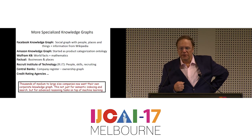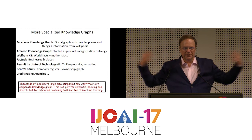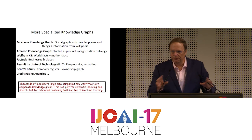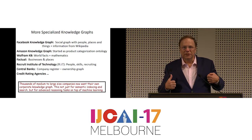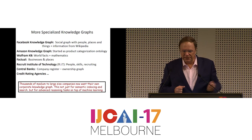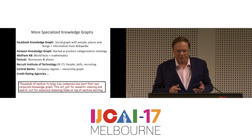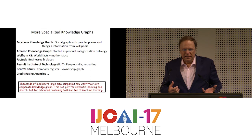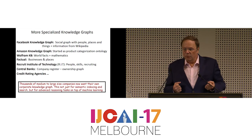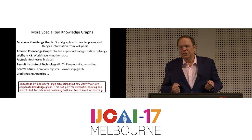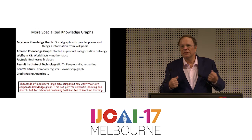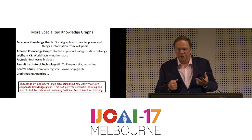Central banks of Europe maintain a knowledge graph that starts with a company register and adds knowledge about which company owns which part of which company. Credit rating agencies need knowledge from different sources — banks, land registers, et cetera — to determine whether a person is creditworthy. But there is a new phenomenon now: thousands of medium-sized and large companies want their own corporate or enterprise knowledge graph, which is much more specialized than the world knowledge graphs shown before. This is not just for semantic indexing and search, but for advanced reasoning tasks on top of machine learning. There is a clear need — lots of companies are asking for a knowledge graph.